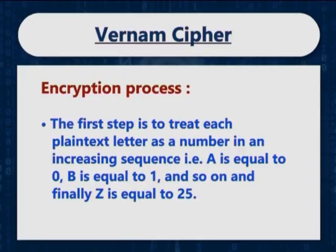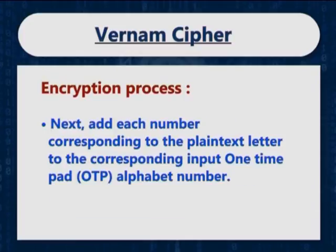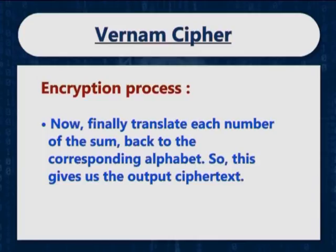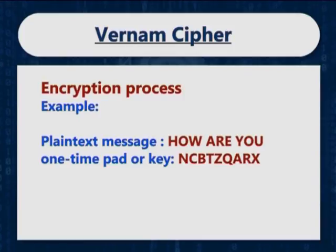Now let us discuss the encryption process used in the Wernam cipher. The first step is to treat each plain text letter as a number in increasing sequence: A is equal to 0, B is equal to 1, and so on, and finally Z is equal to 25. Next, add each number corresponding to the plain text letter to the corresponding one-time pad alphabet number. If this number is greater than 26 then subtract 26 from it, that is performing mod 26. Finally, translate each number of the sum back to the corresponding alphabet, giving us the output cipher text. Let us apply the Wernam cipher to a plain text message: 'How are you?'